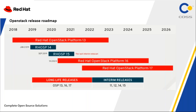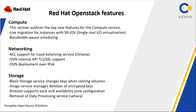We are talking about the OpenStack roadmap from 2018 to 2026. Red Hat OpenStack Platform 13 was available in 2023 mid. We have OpenStack version 14, 15, and now version 16. Version 17 is planned for 2022 release. The long-life releases are versions 13, 16, and 17, while short releases during that period are 11, 12, 14, and 15. Long life releases are important because they are more stable and have been tested in the market for a longer time.